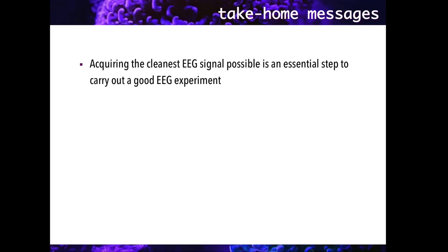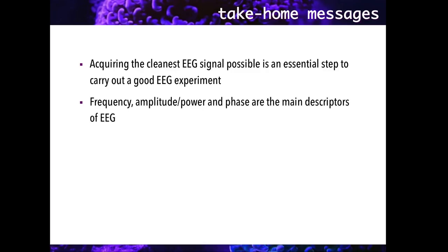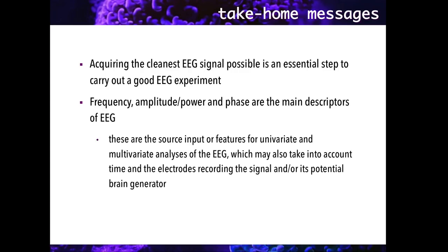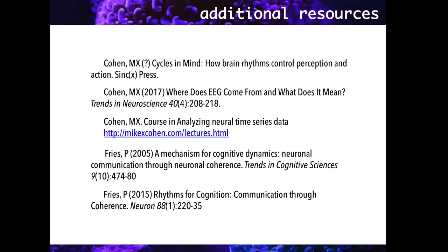Wrapping up with a few take-home messages from this video: remember that acquiring the cleanest signal possible is the first essential step to a great experiment. To describe the EEG data, we rely on frequency, amplitude or power, and phase of the signal. These characteristics or features are the main sources for univariate and multivariate analyses of the EEG, which also take into account time and the sensors recording the signal, and sometimes also the source generating it. To finalize, here you have some more readings and other resources if you want to extend your knowledge of each of the topics covered in this video.